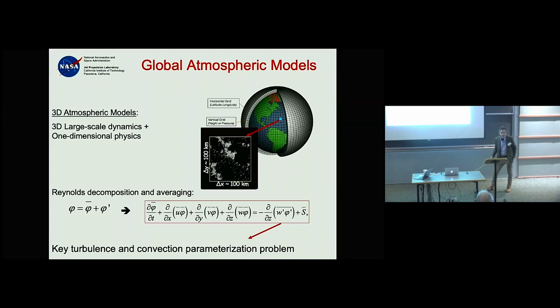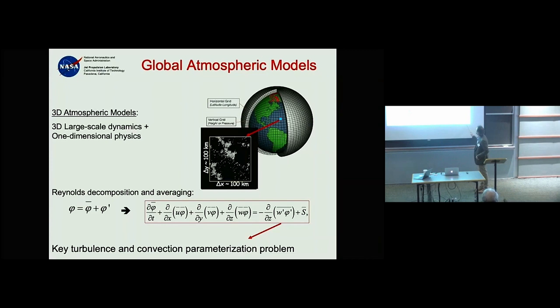When you do Reynolds decomposition and averaging on a thermodynamic variable or passive tracer, you end up with something that looks exactly like this: an Eulerian tendency of the mean, advection of the mean, and sources and sinks depending on the variable.